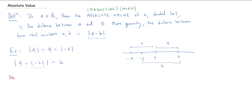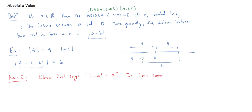Now, here's a little non-example. My good friend Clever Carl notices that in the example above, it looks like the absolute value of both negative four and four is the same. So it seems like all the absolute value is doing is dropping the negative sign. So Clever Carl says, based on that example, that if I take the absolute value of negative a, I must get a — that I drop the negative sign. So the question is: is Carl correct?